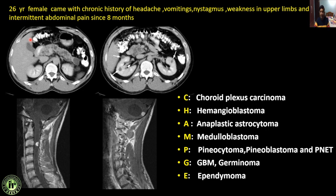Next: a 26-year female with chronic headache, vomiting, nystagmus, weakness in upper and lower limbs, and intermittent abnormal pain for 8 months. There is a cystic lesion with an enhancing peripheral or mural nodule in the cerebellum. An enhancing nodule-like structure is also noted in the spinal cord — classical hemangioblastoma with drop metastasis. Importantly, multiple cystic foci are scattered in the pancreas and kidneys — this is a case of von Hippel-Lindau disease with cerebellar hemangioblastoma and drop metastasis.